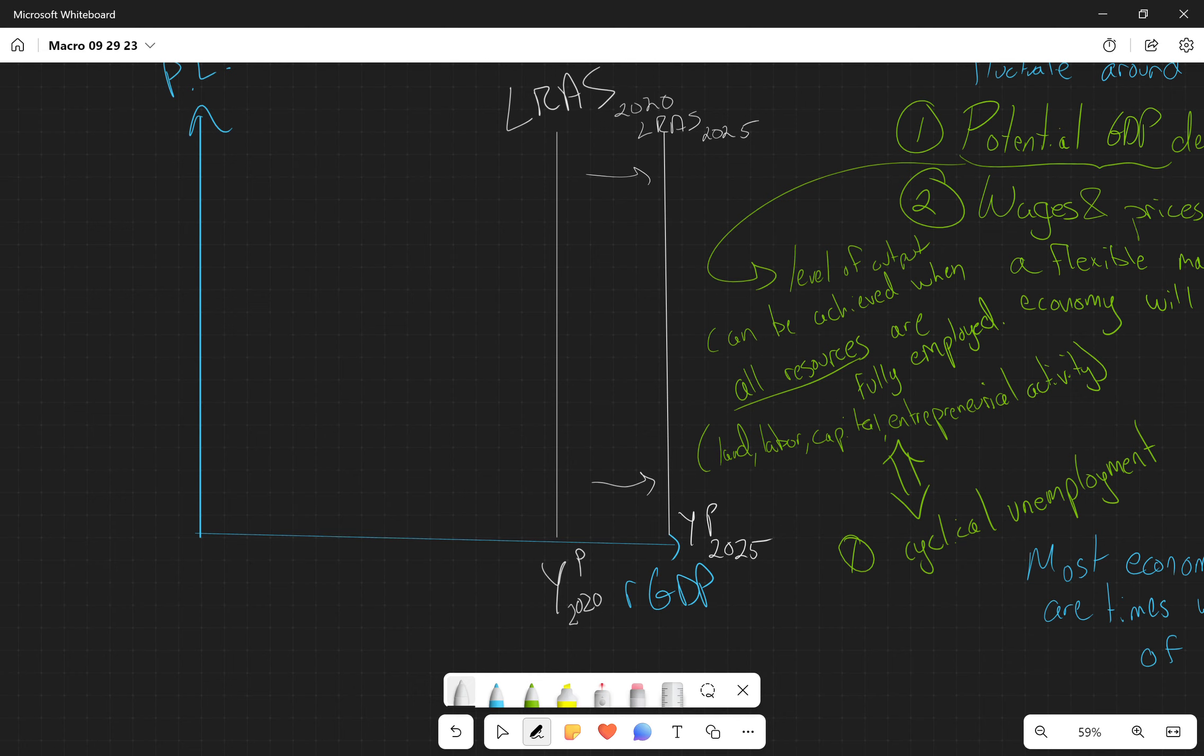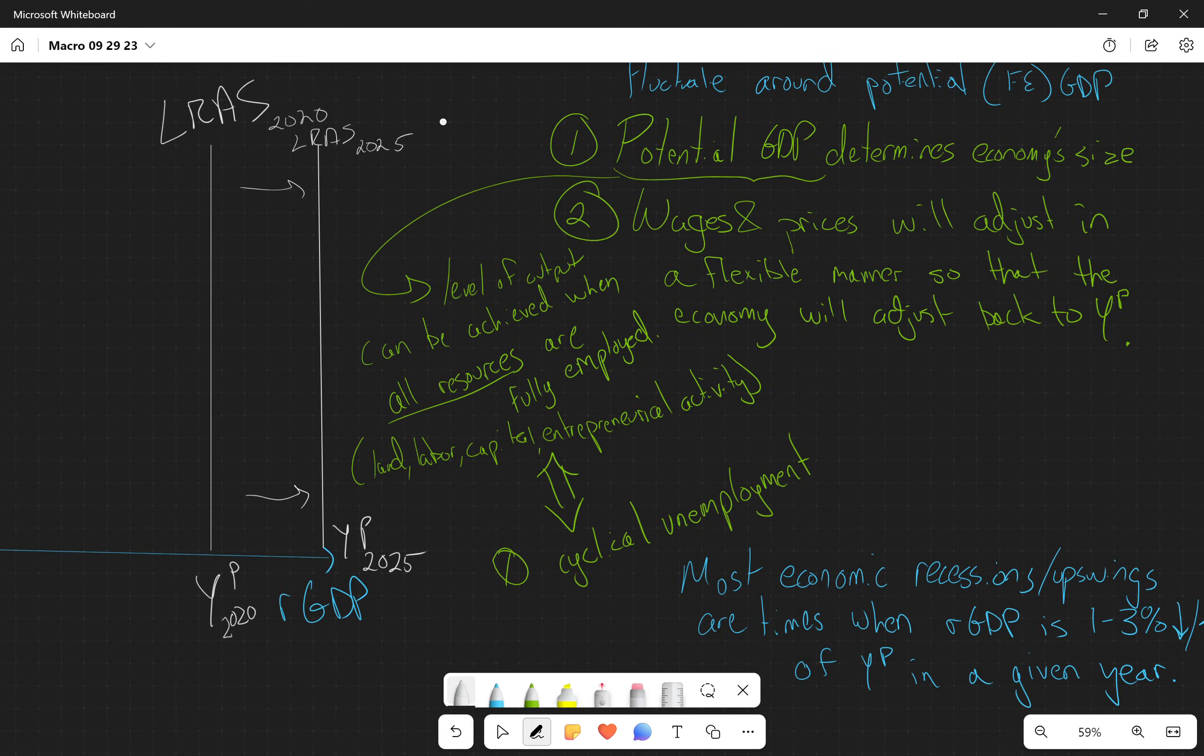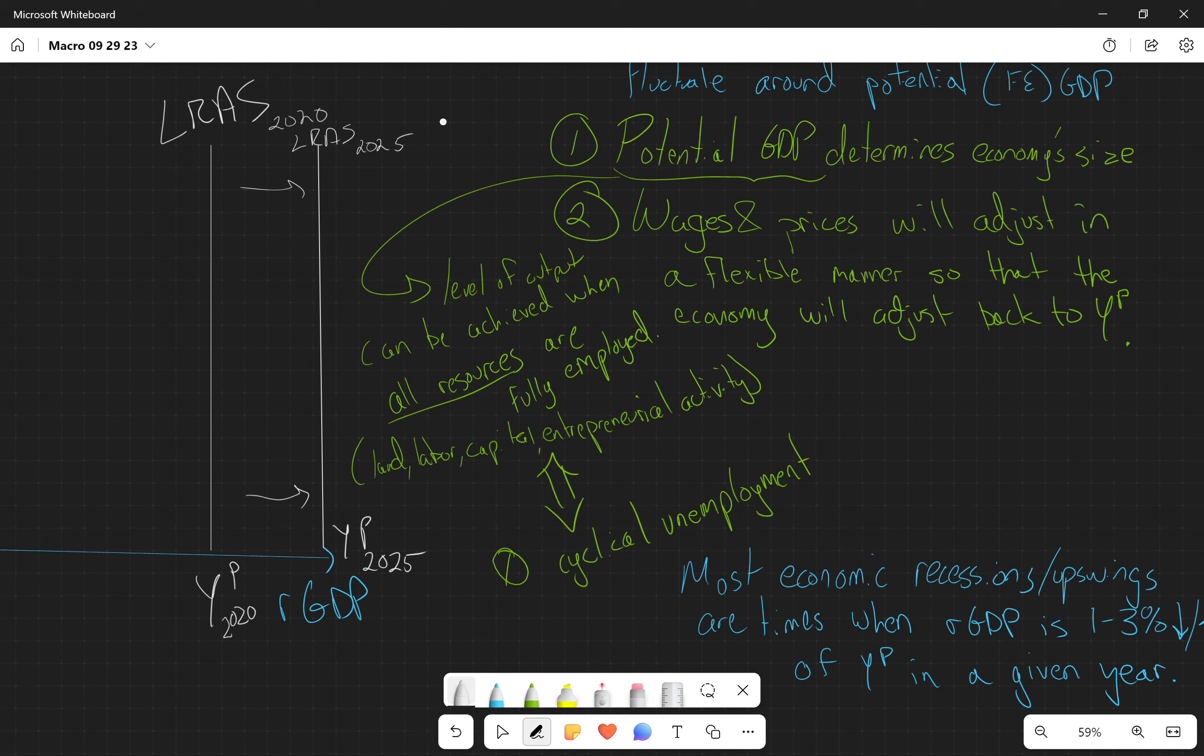Now, part of what we talked about is this second assumption. Wages and prices will adjust in a flexible manner. So unlike the Keynesians, neoclassicists say that even if they're sticky in the short run, they're still flexible over time. An economy can produce above its level of potential GDP in the short run, but it can't sustain that level.